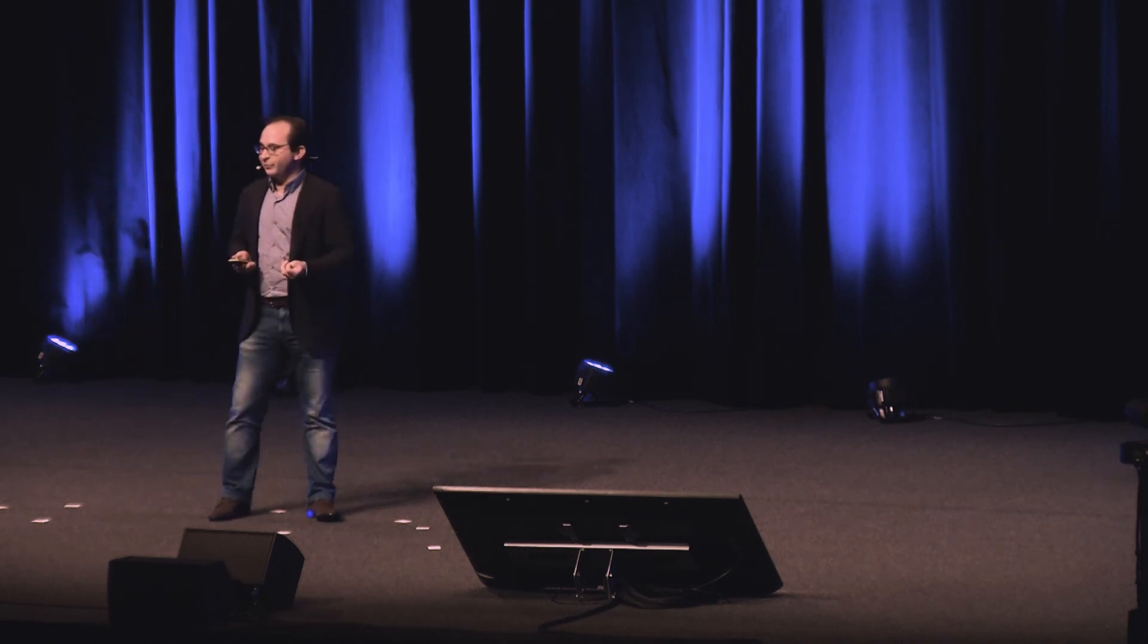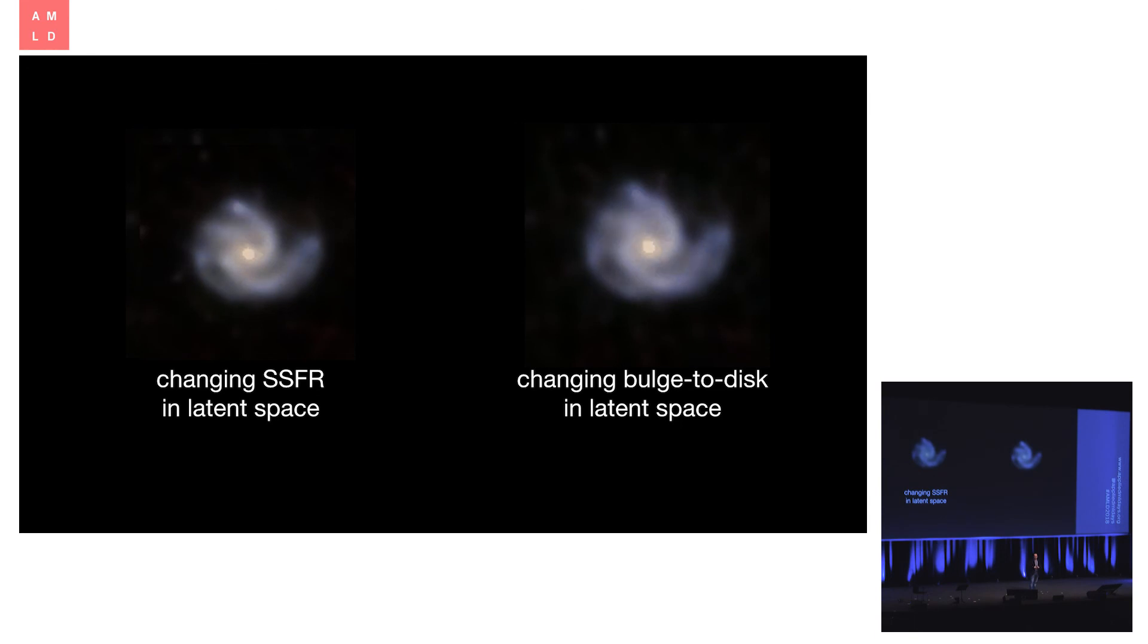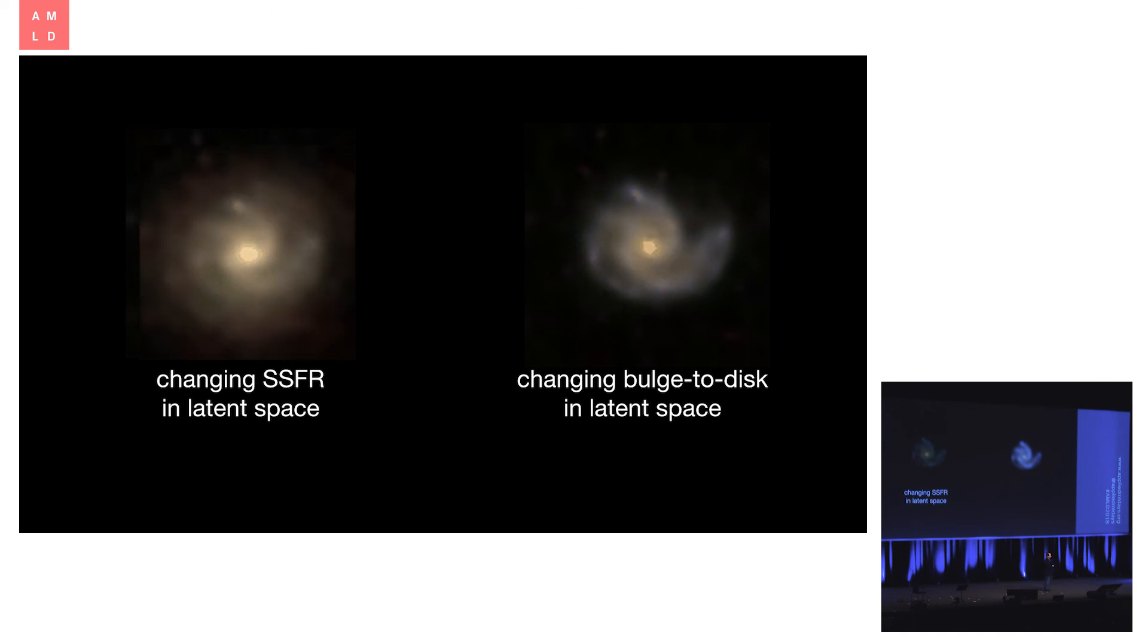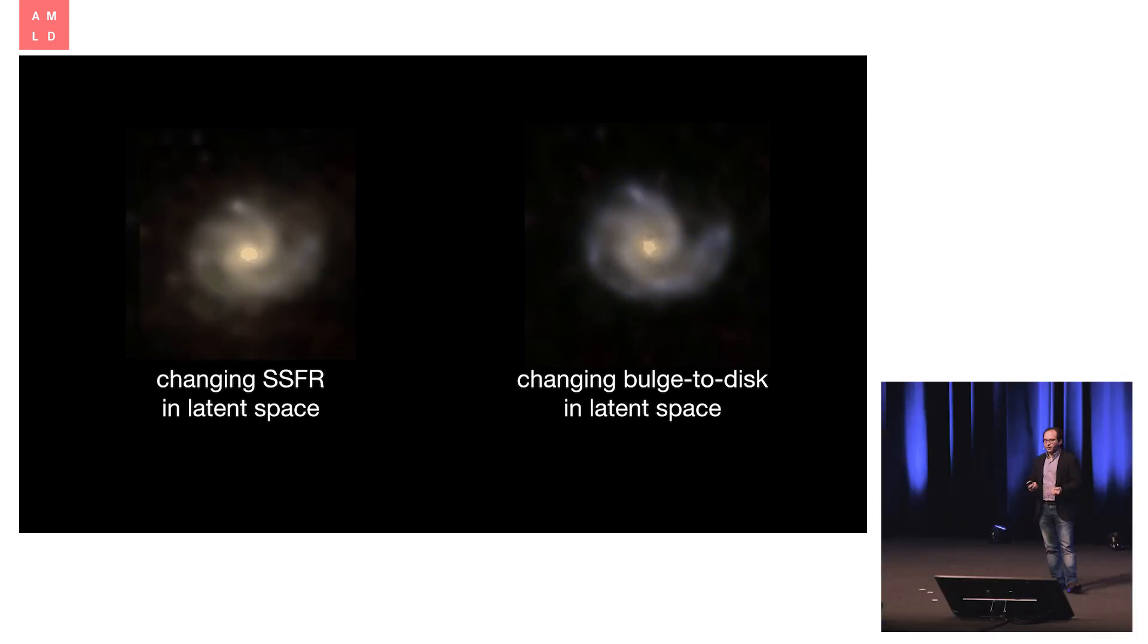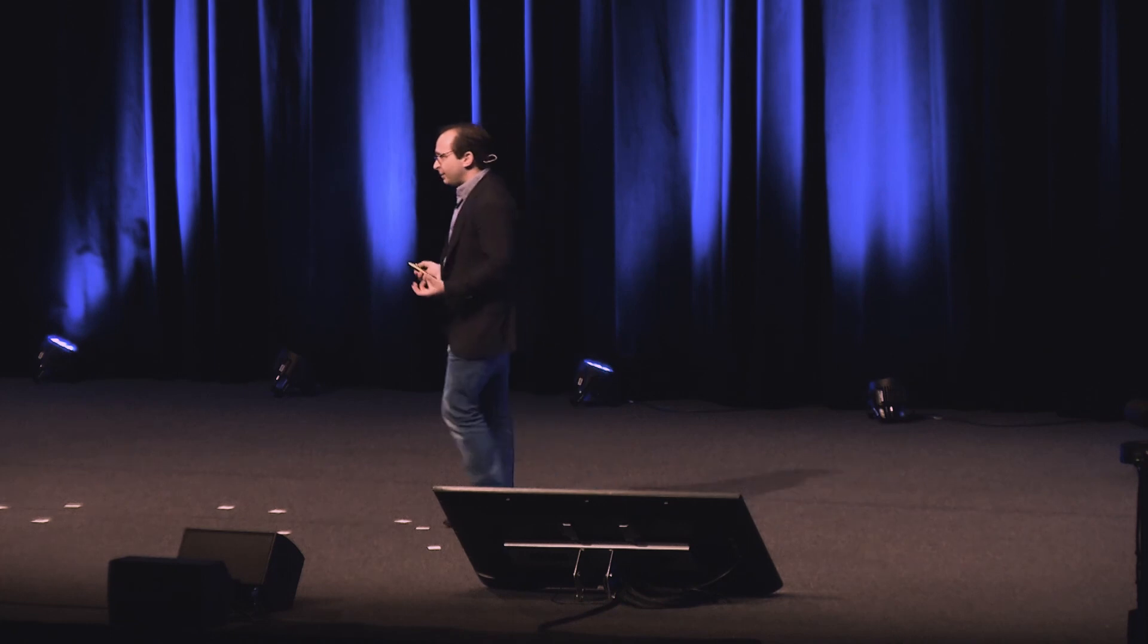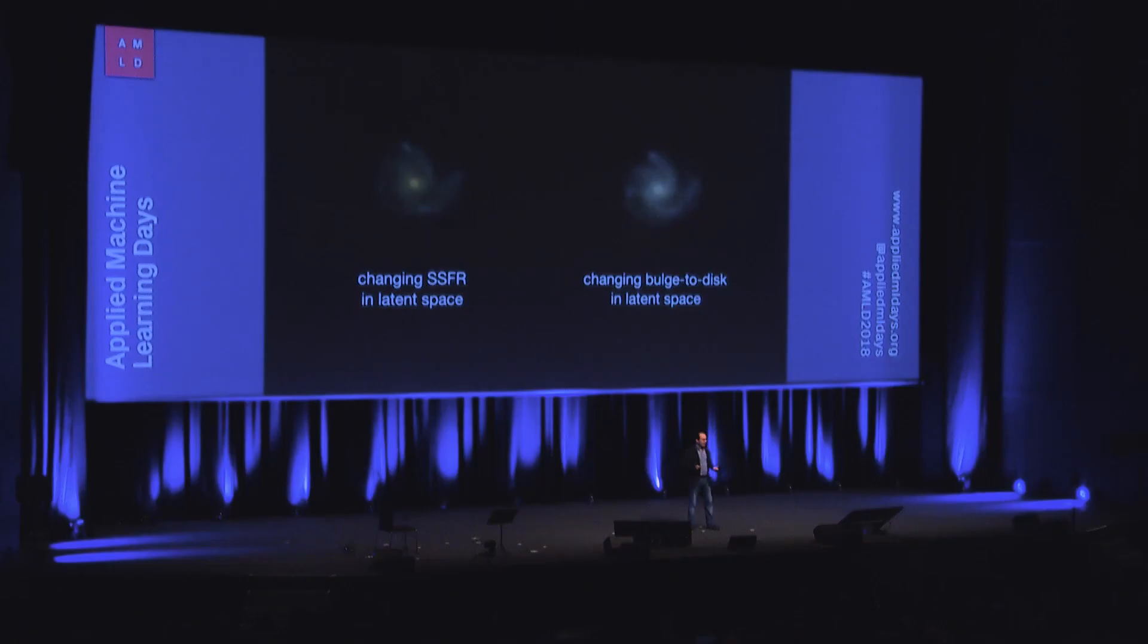I'm just going to change it in the latent space to see what would happen. This is not a simulation. This is not something I just made up. This is a purely data-driven change of this galaxy. I can do a similar thing. I can change the structure, the configuration of the orbits of the stars in this galaxy by changing its so-called bulge-to-disc ratio and transform the galaxy that way.